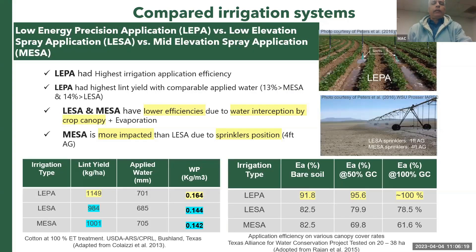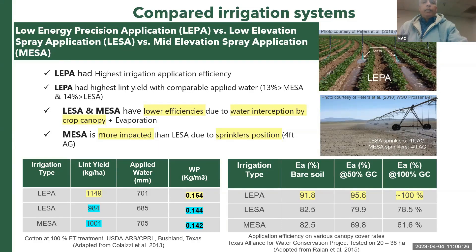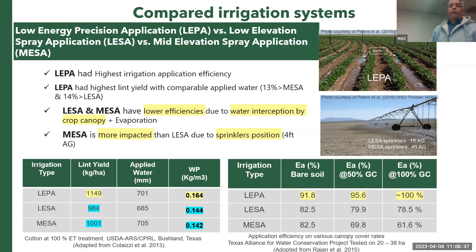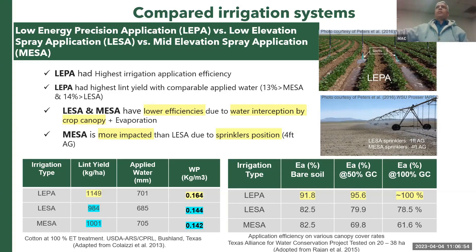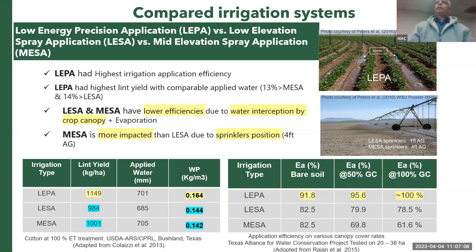Comparing LEPA, MESA (mid-elevation spraying application), and LESA (low-elevation spraying application): LEPA with drag socks achieves the highest yield and highest water productivity and has the highest application efficiency. This makes sense because it applies water close to the soil surface, whereas systems that spray water over the canopy increase the evaporating surface — the entire wetted plant loses water to evaporation.